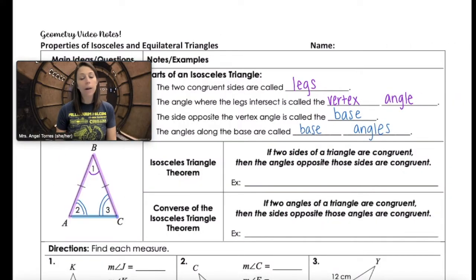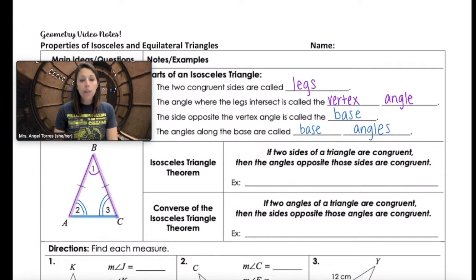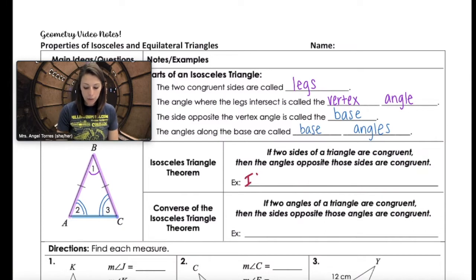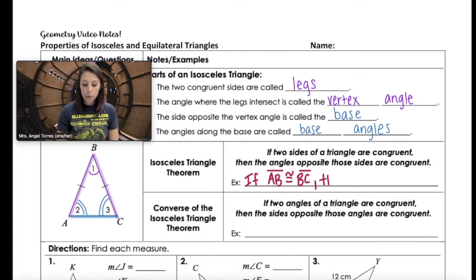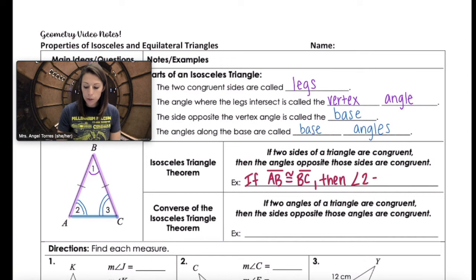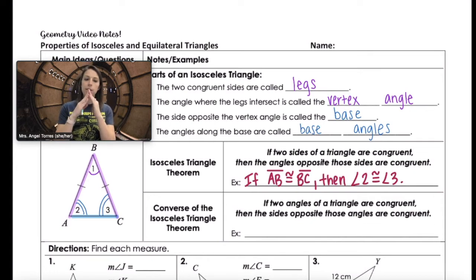Here's what we can conclude about isosceles triangles. First, if two sides of a triangle are congruent, the angles opposite those sides are also congruent. So if side AB is congruent to side BC, then the base angles are also congruent — angle two is congruent to angle three. Essentially, if the legs are congruent, the base angles are congruent.